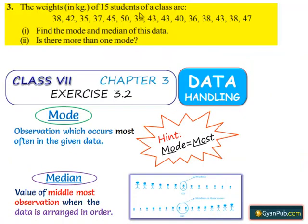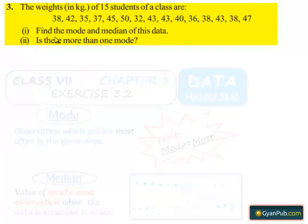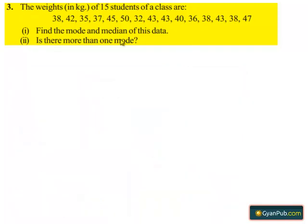Now question number 3. The weights of 15 students of a class are as follows. First part: find the mode and median of this data. Second part: is there more than one mode?